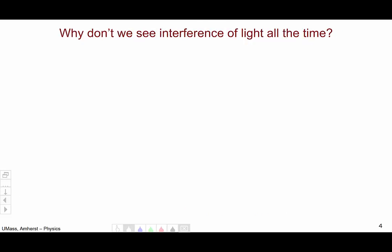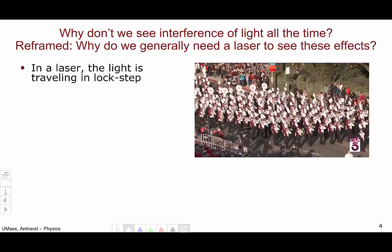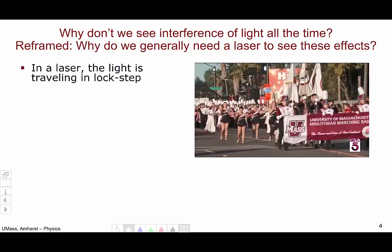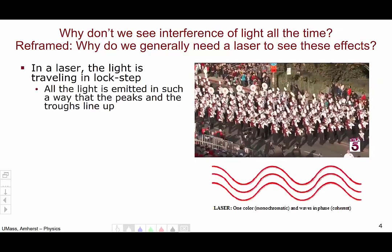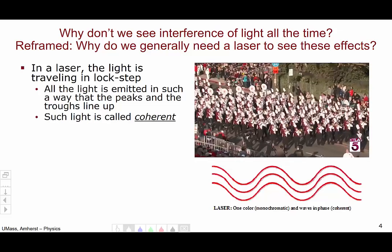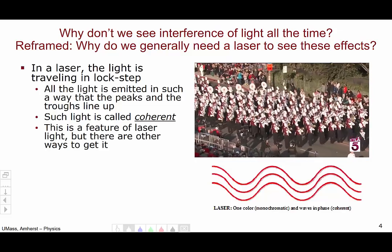So, if light interferes with light, why don't we see the interference of light all the time? I am going to reframe this question into why do we generally need a laser to see the effects of light interfering. Well, in a laser, the light is traveling in lockstep with itself, like our marching band members here at the Rose Bowl Parade. This is just a property of lasers, that the light is emitted in such a way that the peaks and the troughs of the light waves line up. Such light is called coherent light, and is just a feature of laser light.